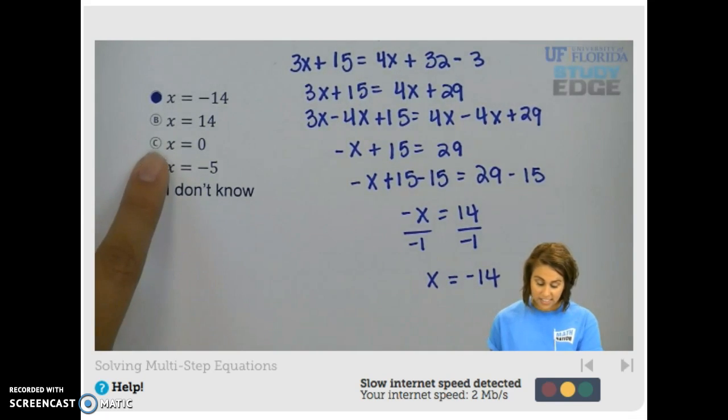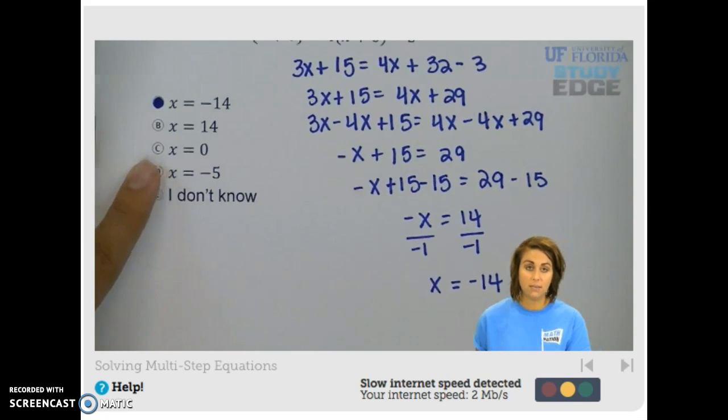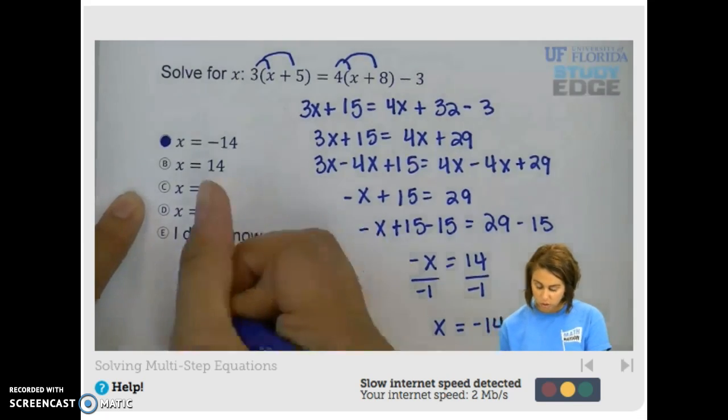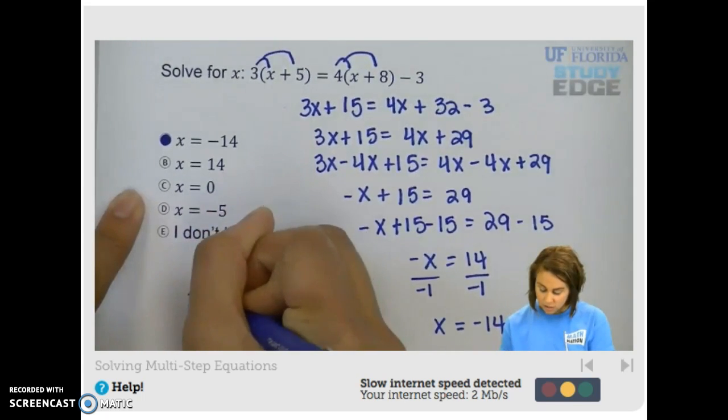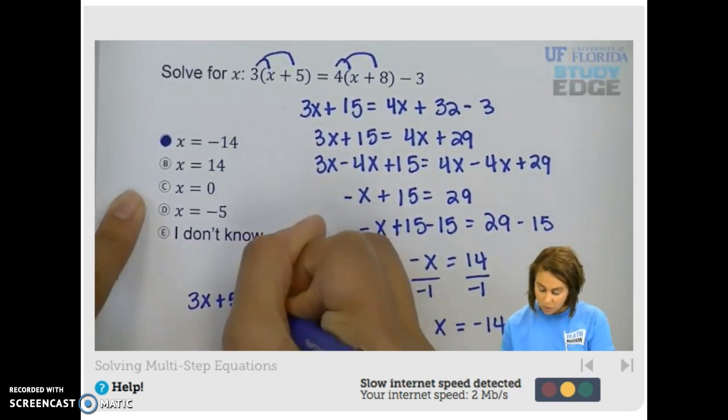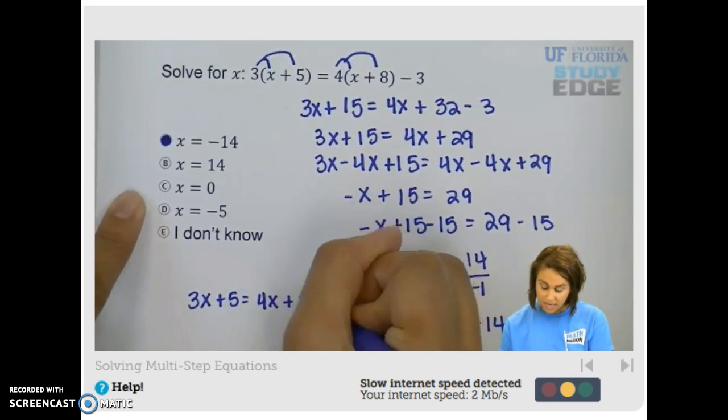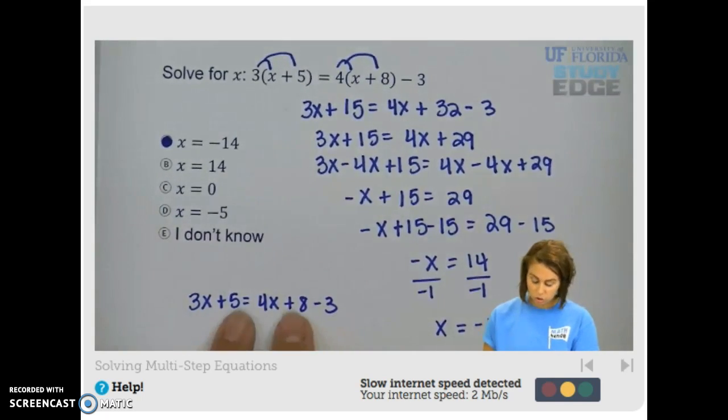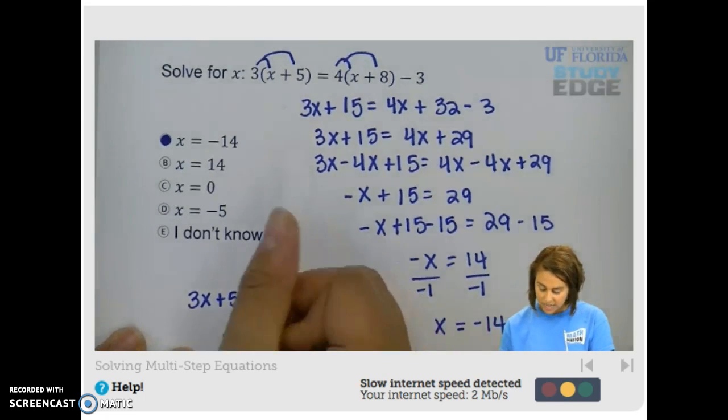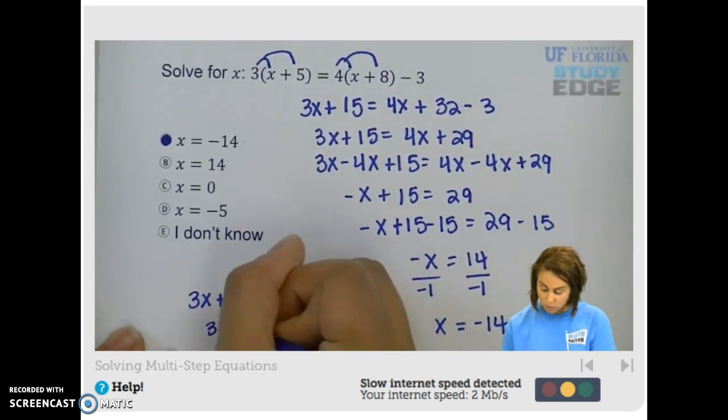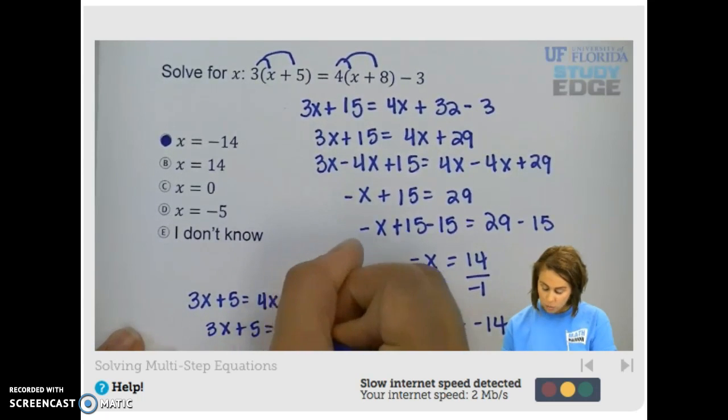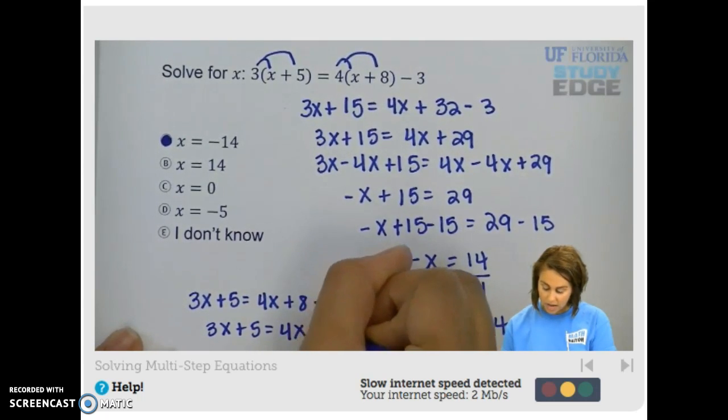If you chose C as your answer, you may not have distributed correctly. If we look at the original equation, if you wrote this as 3x plus 5 equals 4x plus 8 minus 3, you didn't distribute your 3 and your 4 all the way through your binomial. In that case, you would have 3x plus 5 equals 4x plus 5.